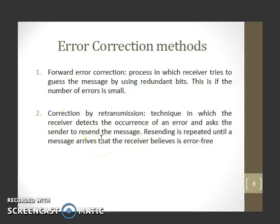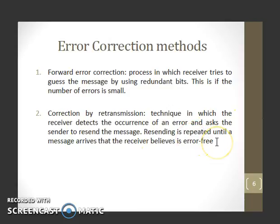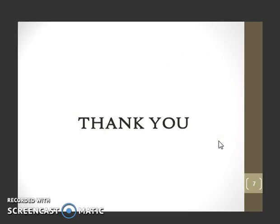In correction by retransmission, the receiver detects the occurrence of an error and asks the sender to resend the message. Resending is repeated until a message arrives that the receiver believes is error free. This concludes the topic of error detection and correction.